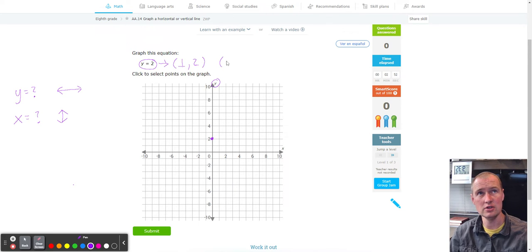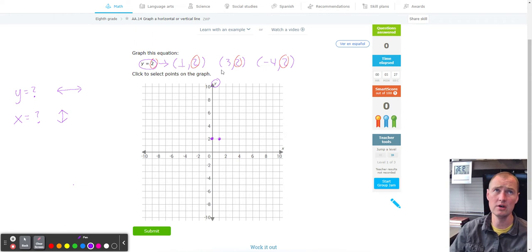So for an example, you can make it one, two. You can do, let's say three, but the two stays. You can also do like say negative four and positive two. But the key here is that the two must always fall in the Y slot. And when the X value is not given, you make it to whatever you want it to be.